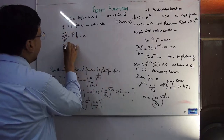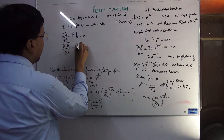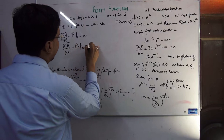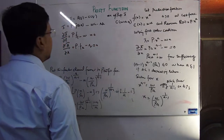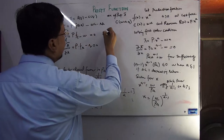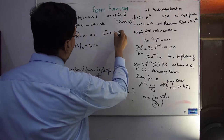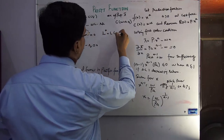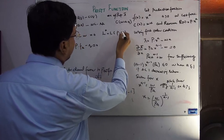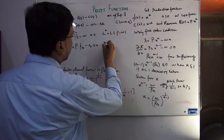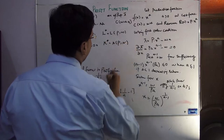Similarly, taking the partial derivative with respect to K gives P·FK minus R. You set the first order conditions equal to zero and solve. You find the factor demand function: L is a function of p (output price) and w (labor price), and K is a function of p (output price) and r (capital price).